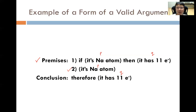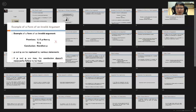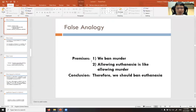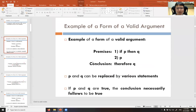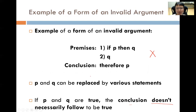Let's look at an example of the form of an invalid argument. Premise 1: if P then Q. Premise 2: Q. Therefore P. This is the form of an invalid argument because even if the premises are true, the conclusion does not necessarily have to follow to be true.